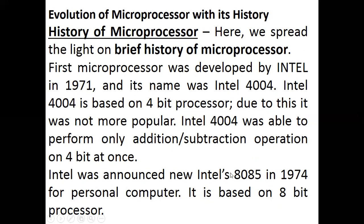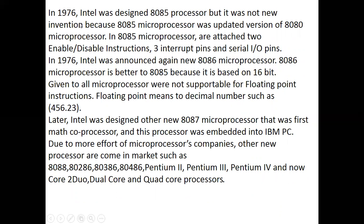The Intel 8085 was first introduced by Intel in 1974. It was further enhanced — drawbacks were reduced and new features were added. After the 8080 and 8085, there came the 8086, which is a 16-bit microprocessor. As time went on, new processors were invented. This is your series of microprocessors.